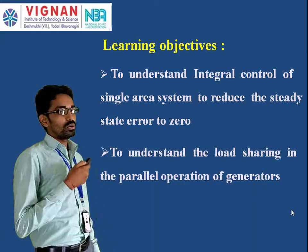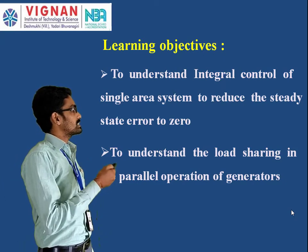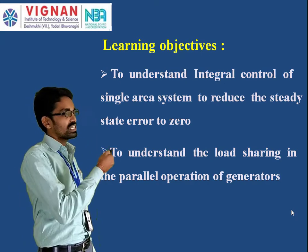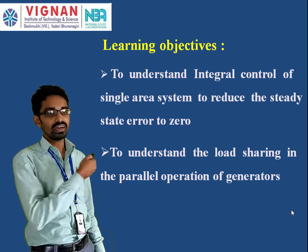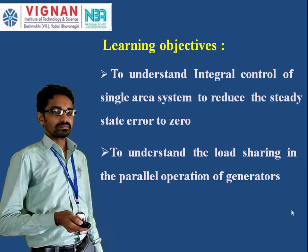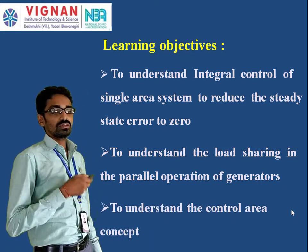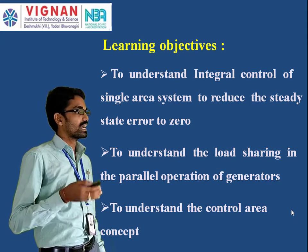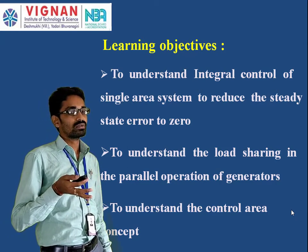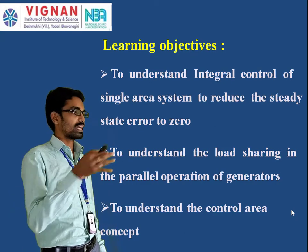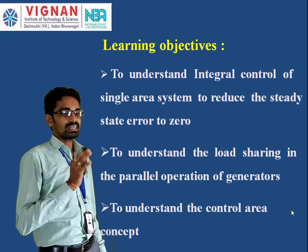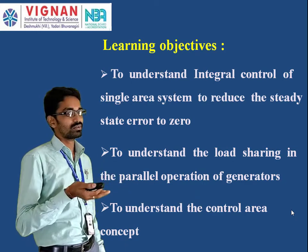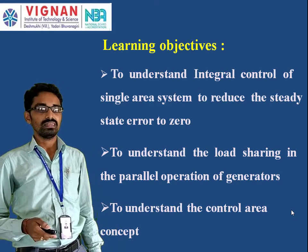The second objective is to understand load sharing between parallel generators. We are going to connect two generators in parallel and explain how the load is shared between them. The third objective is to understand the control area concept — how the control area works, what control areas exist in a power system, and what is the area control error, that is ACE.